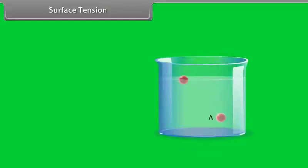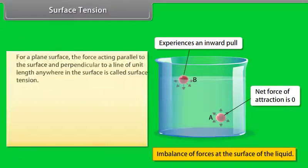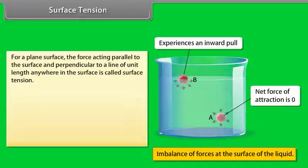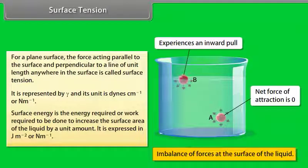Surface tension: a molecule within the bulk of a liquid is uniformly attracted in all directions by neighboring molecules, so the net force of attraction is almost zero. However, a molecule at the surface of the liquid has no upper molecules to participate in attraction, creating an imbalance of forces. Consequently, the molecules at the surface experience a resultant inward pull. For a plane surface, the force acting parallel to the surface and perpendicular to a line of unit length anywhere in the surface is called surface tension. Surface energy is the energy required to increase the surface area of the liquid by a unit amount, expressed in J/m² or N/m.